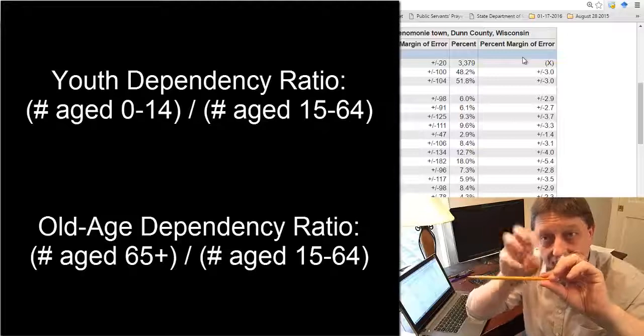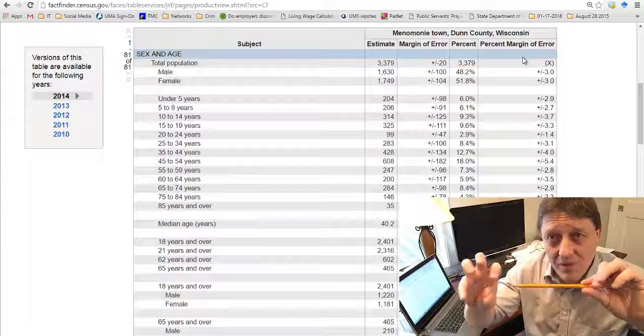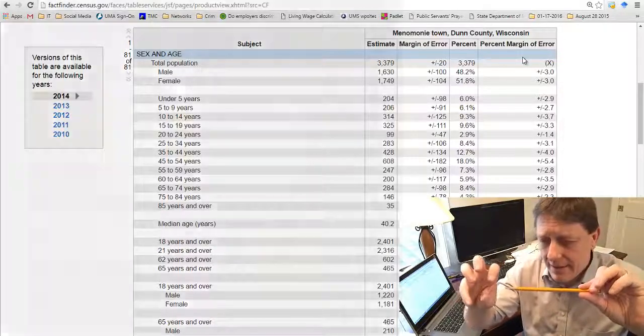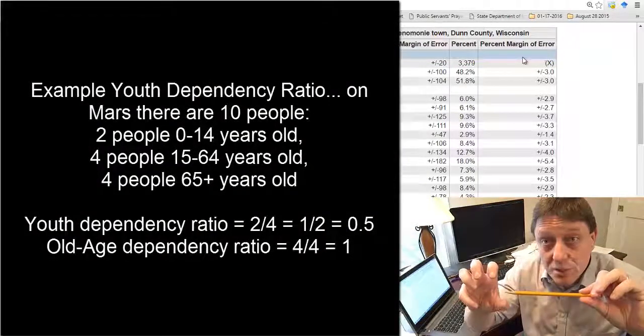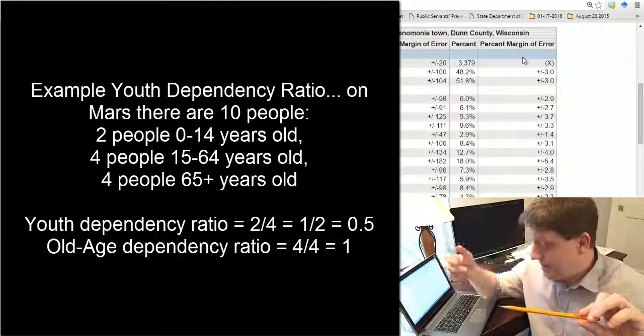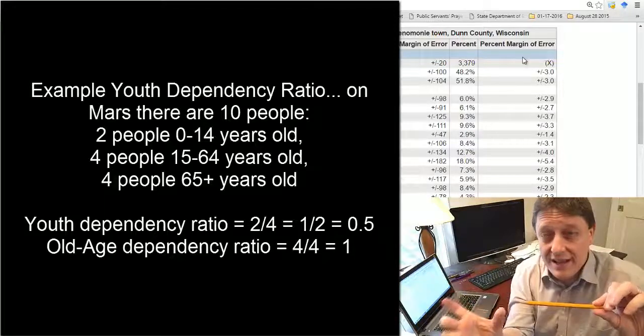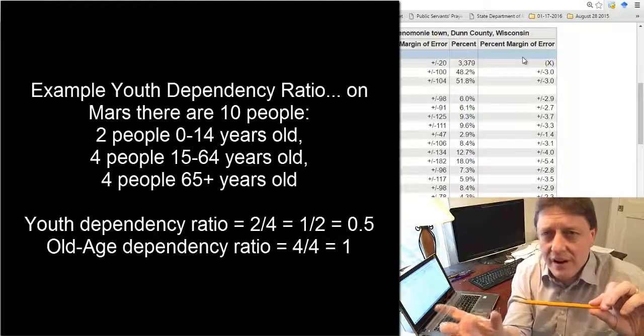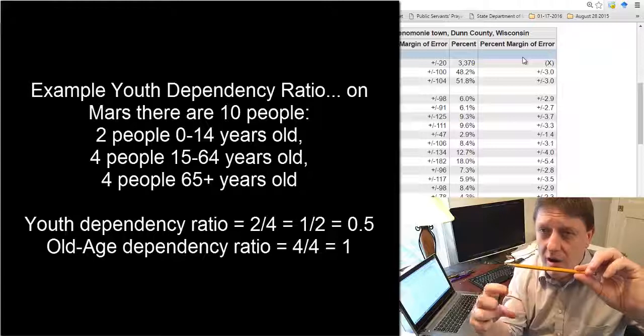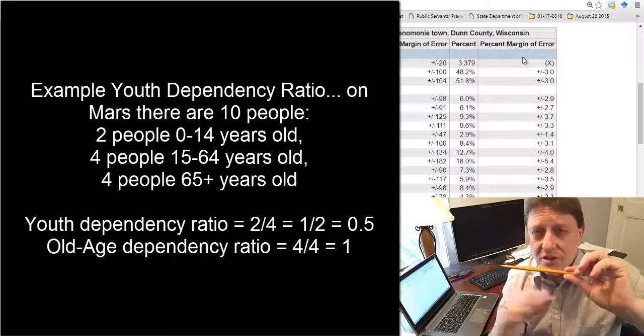And you take that fraction, and then you do a division, and you'll come out with a decimal figure between zero and who knows how many. And that will tell you, the answer will be in that decimal figure, how many of those dependent people there are for those who are in the age range to be working.